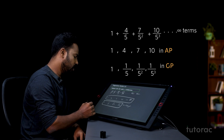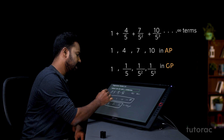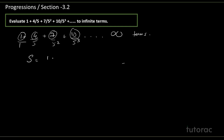Now, how do we find the sum? I am writing S = 1 + 4/5 + 7/5² + 10/5³ up to infinity. I am not going to split it into an AP and a GP, because the formula for this sum is quite complex — a very big formula that is hard to memorize. Instead, I am going to convert this AGP into a GP.